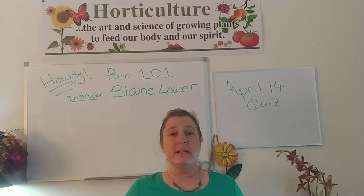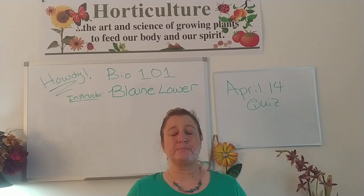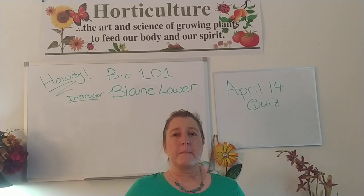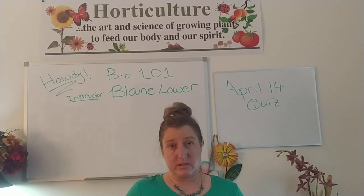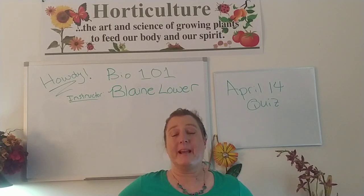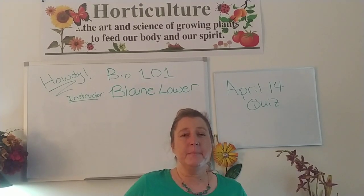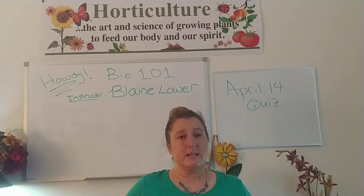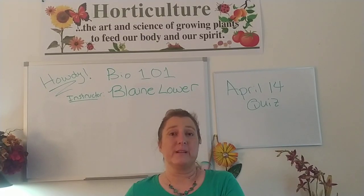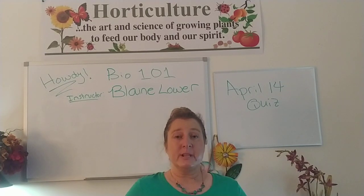Number seven: during what age did people begin cultivating plants? Number eight: which person is responsible for developing the binomial taxonomy system? He's a gentleman from Switzerland who lived in the 1700s and created the binomial taxonomy system — last name only is fine. Lastly, true or false: were victory gardens responsible for creating as much fruit and vegetables as commercial production back in the 1940s?